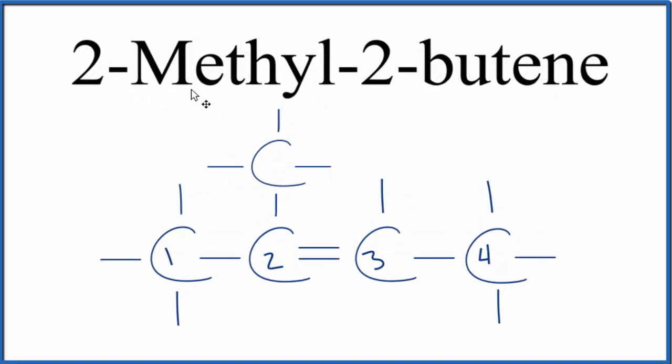This is the structural formula for 2-methyl-2-butene. We have our main chain of four carbons. We have a double bond that starts on the second carbon right here. And then we have a methyl group that's also on the second carbon, 2-methyl-2-butene.